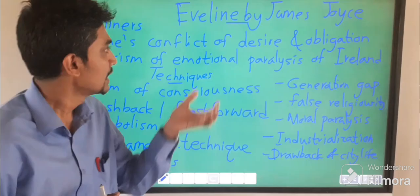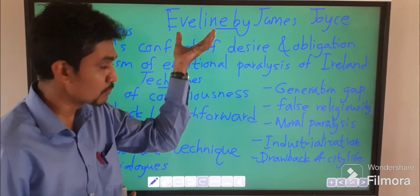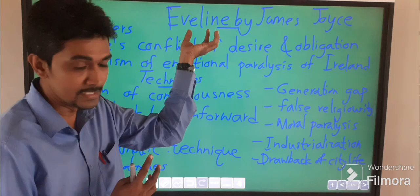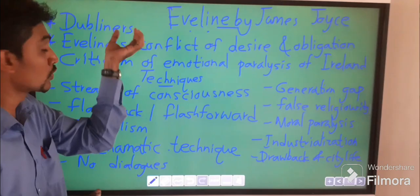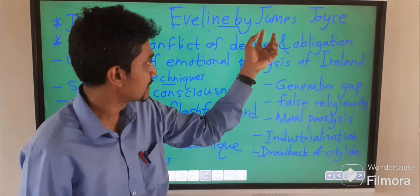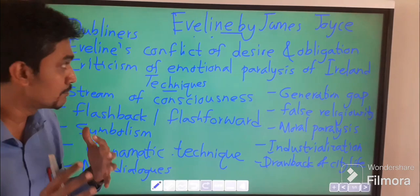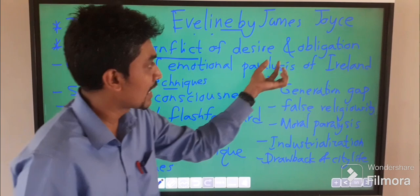Hello everyone. Today we are going to learn A-level literature — one short story in brief — that is about Evelyn by James Joyce. Evelyn from his work is about a 19-year-old girl who was in a dilemma situation regarding her psychological condition. In Dubliners, moral paralysis was developed in that country. The writer was James Joyce, and mainly Evelyn is basically about the personal theme of Evelyn's conflict of desire and obligation.